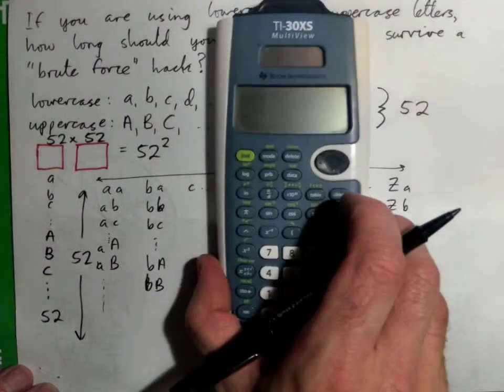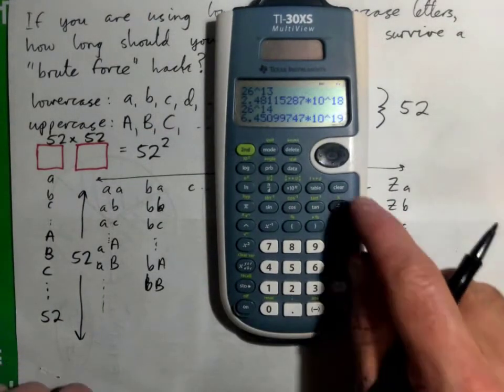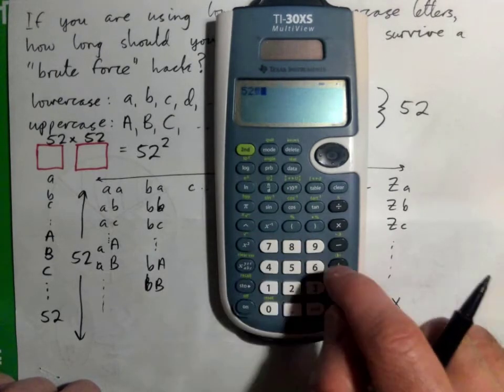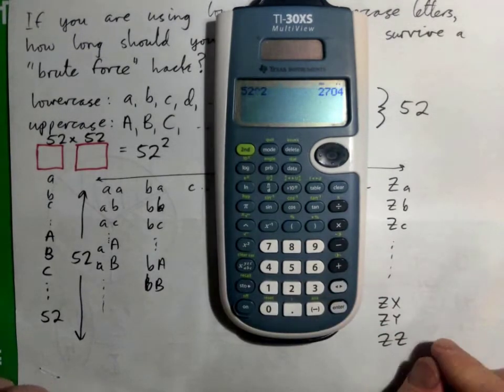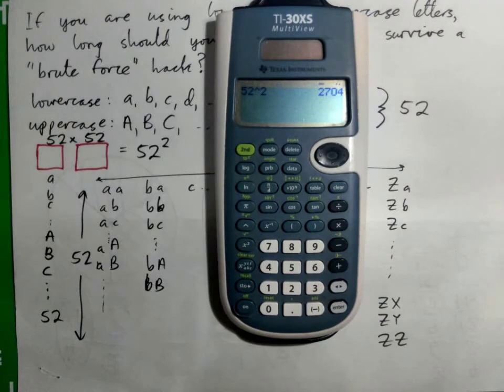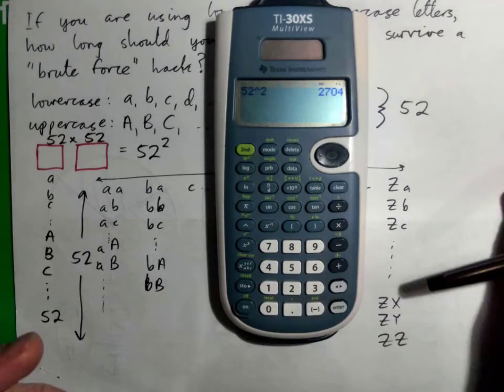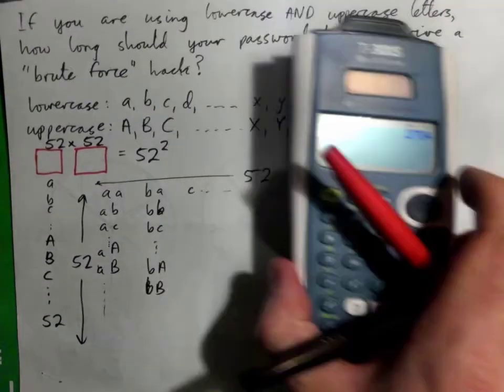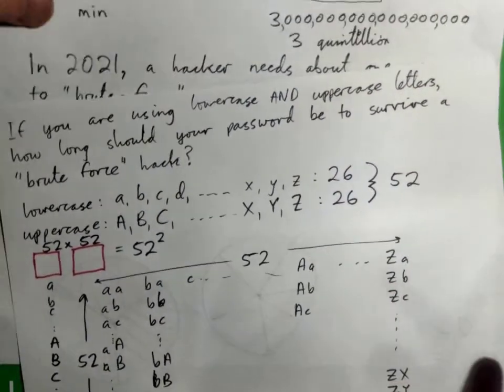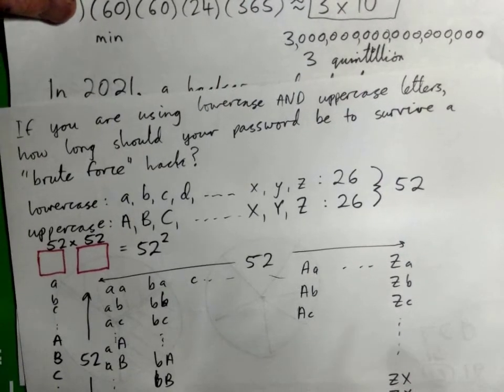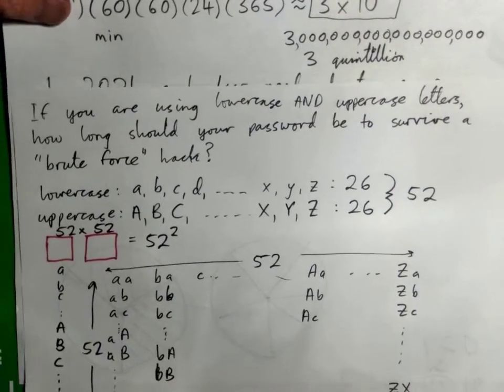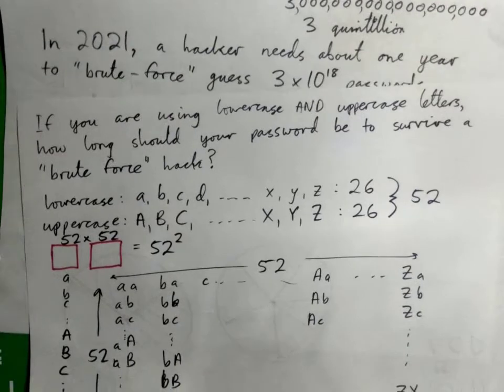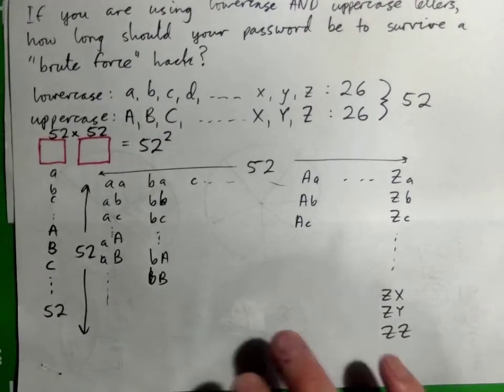And if you can get that idea, then we should be good to go on the rest. But 52 squared is 2,704, right? So for a two-letter password with upper and lower cases, there are 2,704 possible combinations. Not enough to get by the hackers these days because they can guess 3 quintillion in a year or so. So we need more than that.